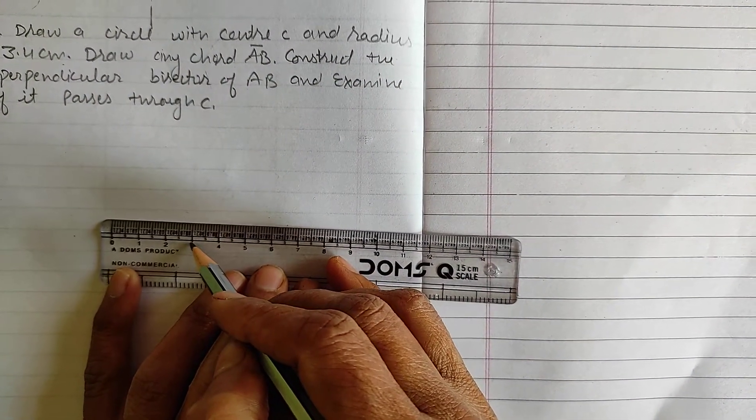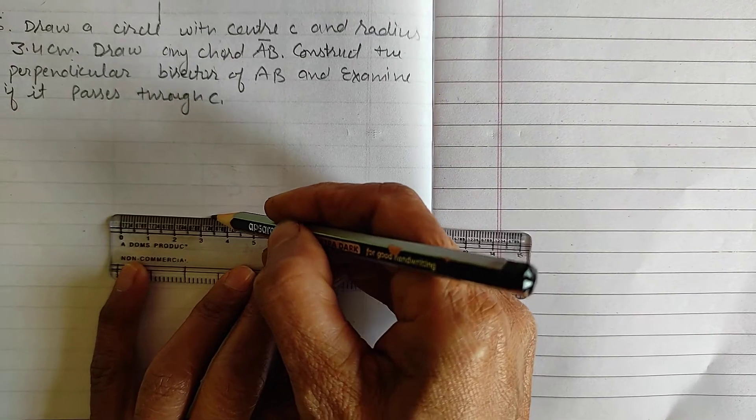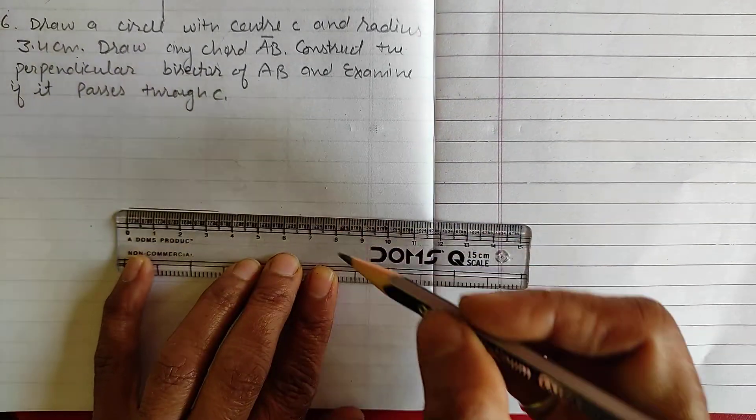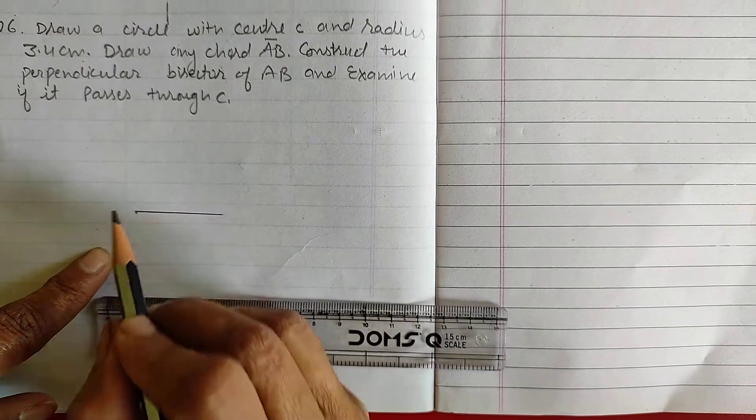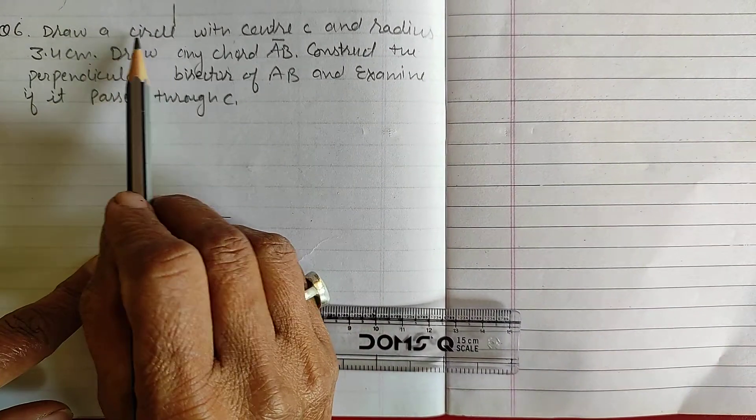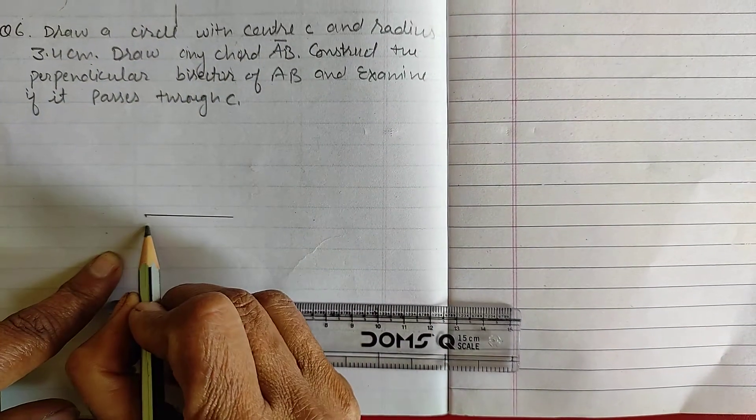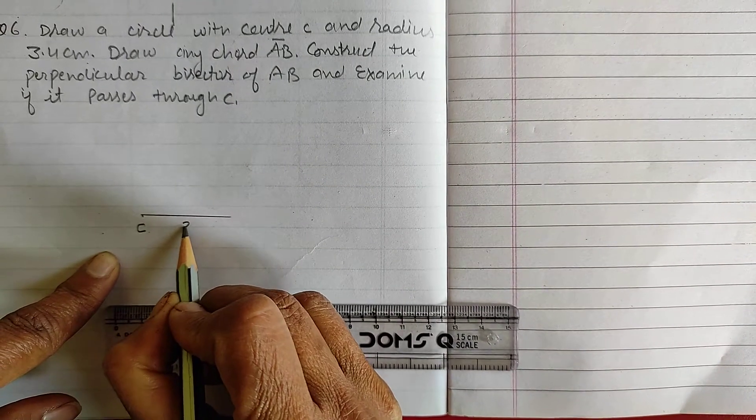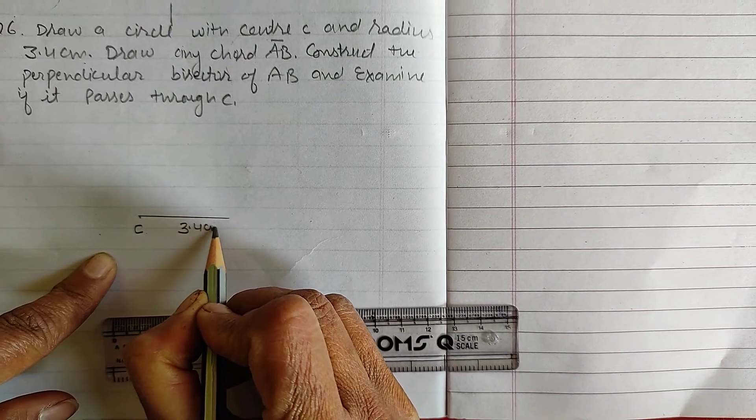So, this is your 3 and this is your 3.4. This is your radius and you have to take center C. So, this is your center and 3.4 cm.